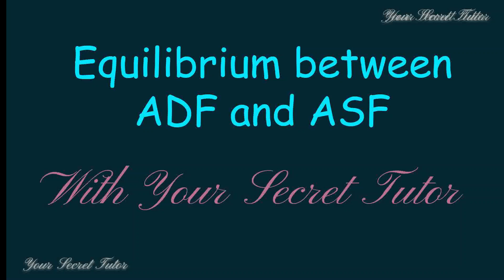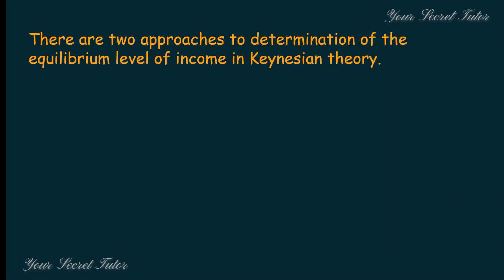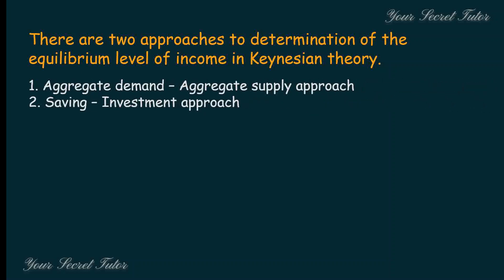We will talk about two approaches to determine the equilibrium level of income in Inclination Theory. The first approach is the Aggregate Demand and Aggregate Supply Approach, and the second is the Saving Investment Approach.